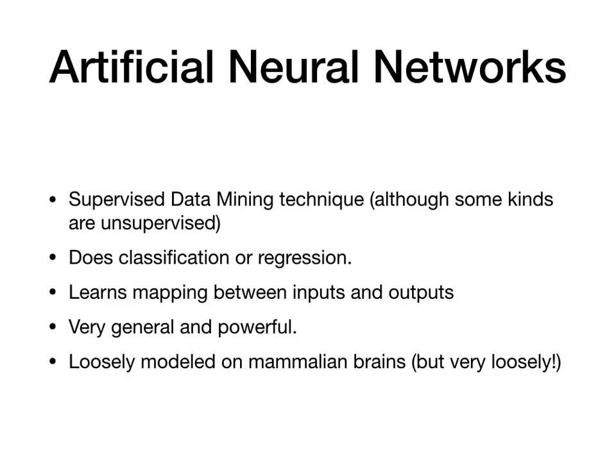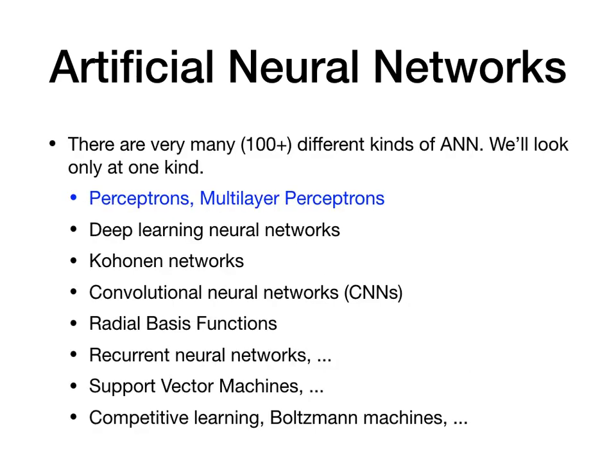Neural networks are a supervised machine learning or data mining technique, although there are many many kinds and some of those are unsupervised. We can use neural networks to do both classification and regression, and in general it can learn a mapping between inputs and outputs — assuming we have enough neurons — to any level of accuracy. So it's a very general and powerful approach, and it's very loosely modeled on mammalian brains, but very very simplistic. There are many kinds of artificial neural networks, definitely more than 100. We're going to look at only a couple — multilayer perceptrons or perceptrons.